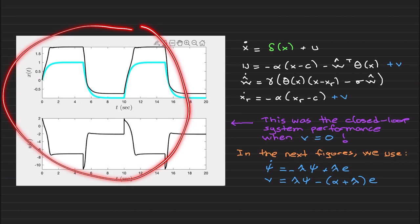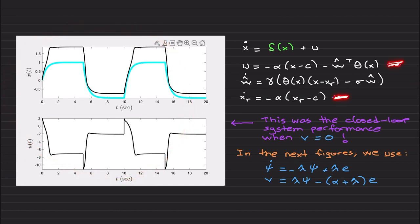Of course, V was zero, and we obtained this plot. In this plot you can ignore V. I am not trying to recover the closed-loop system performance. This was the response that I just got, and this was the closed-loop system performance when V is zero. So in the next figures, we are now going to apply V to the control signal as well as the reference model system for the purpose of recovering the ideal closed-loop system performance.